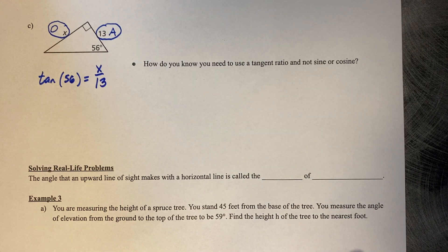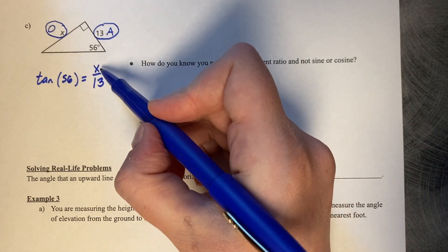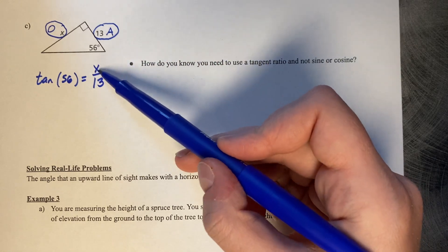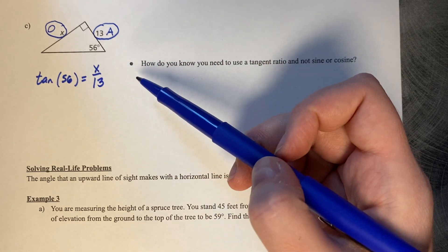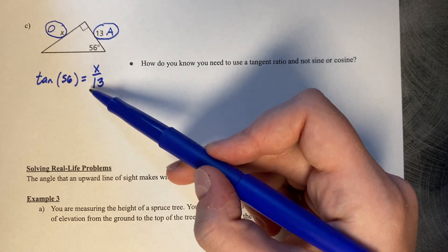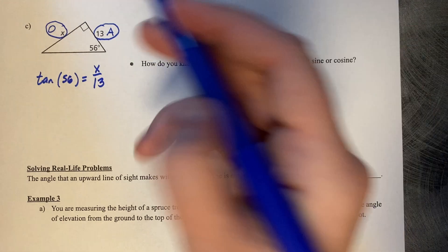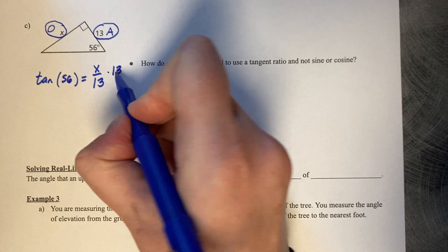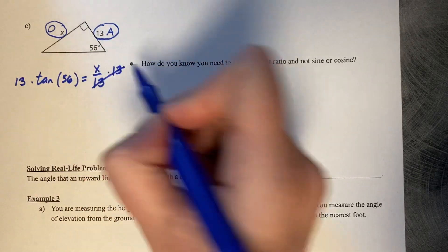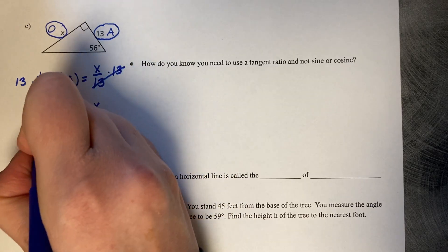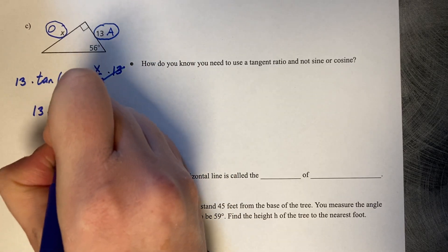This one's of a different flavor because this one has x in the numerator rather than the denominator. If we're trying to solve for x, who's attached to x? 13. It's attached with division, so we undo division with multiplication. We're going to multiply both sides by 13.